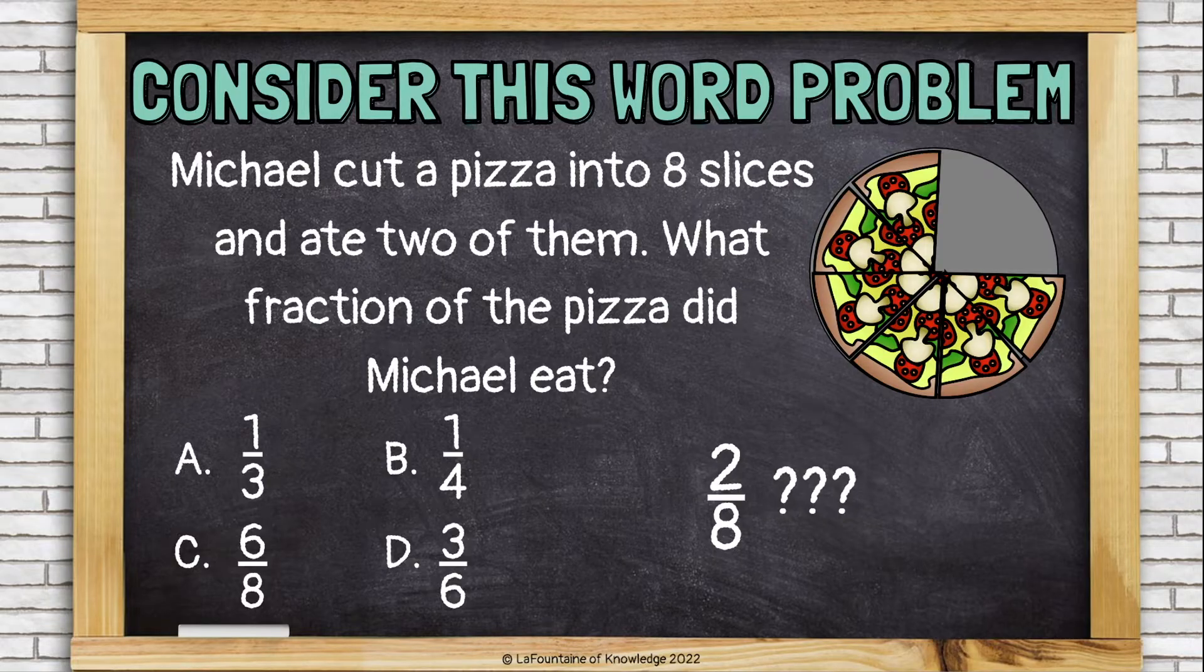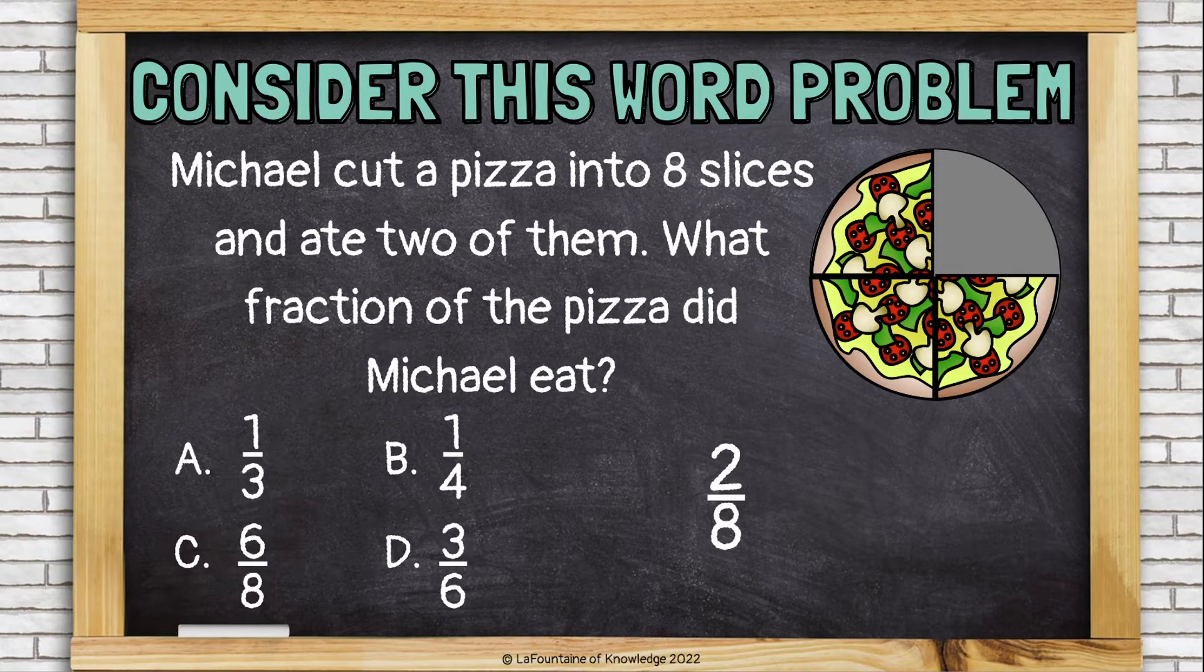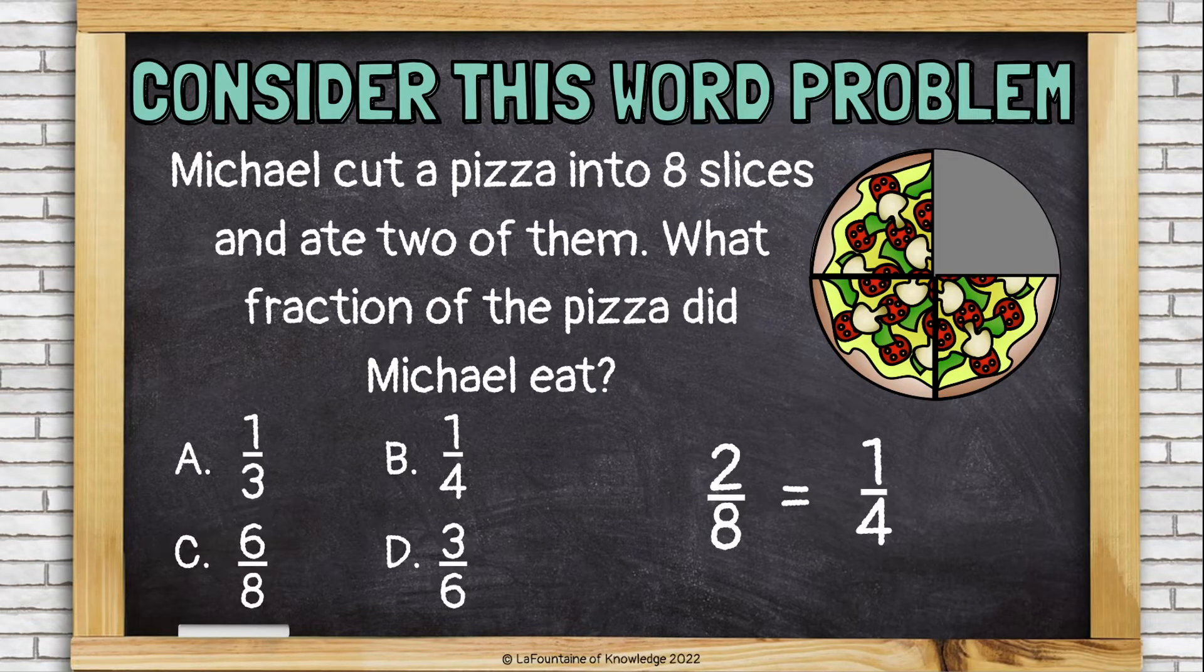Hmm, let's look at this pizza a different way. The same amount of pizza, but now I can see that it was cut into four slices and Michael ate one of them. Two-eighths equals, or is equivalent to, one-fourth.